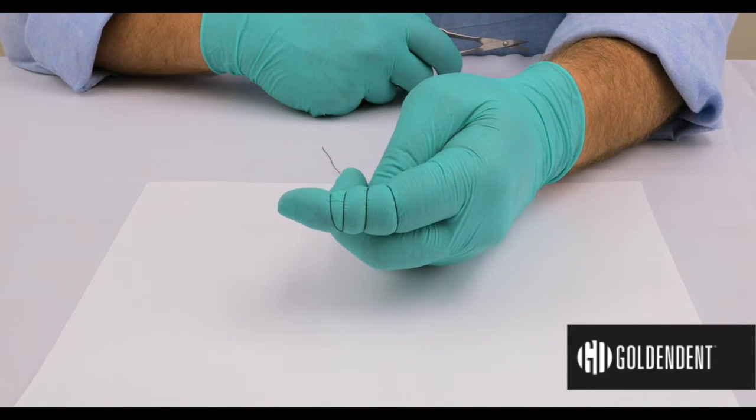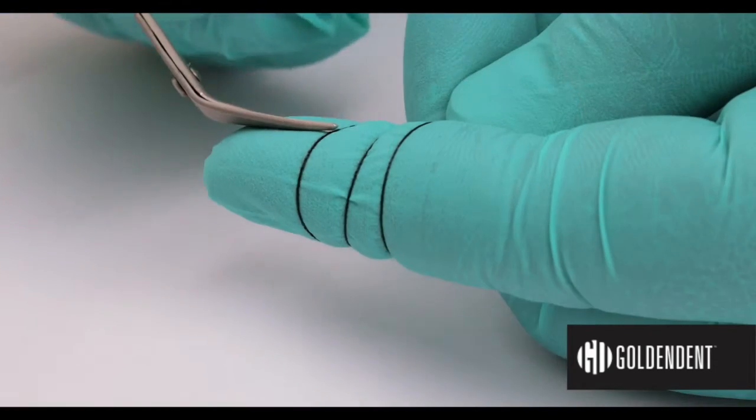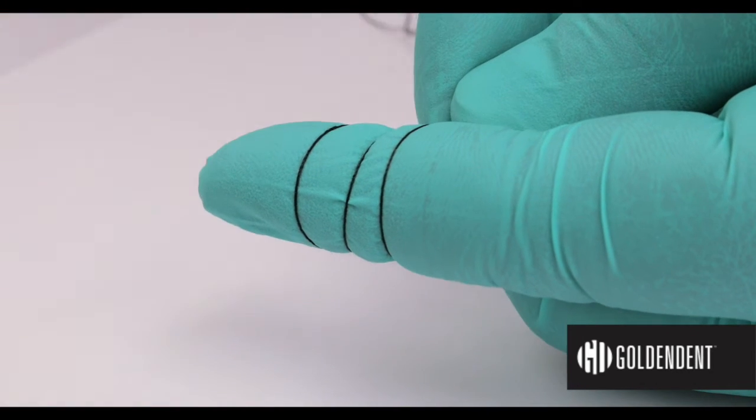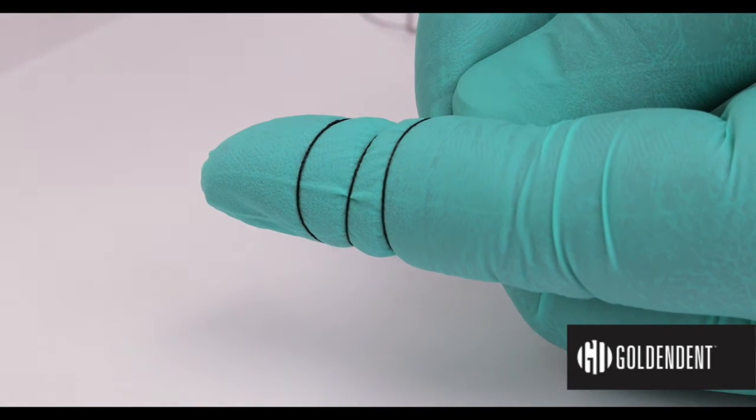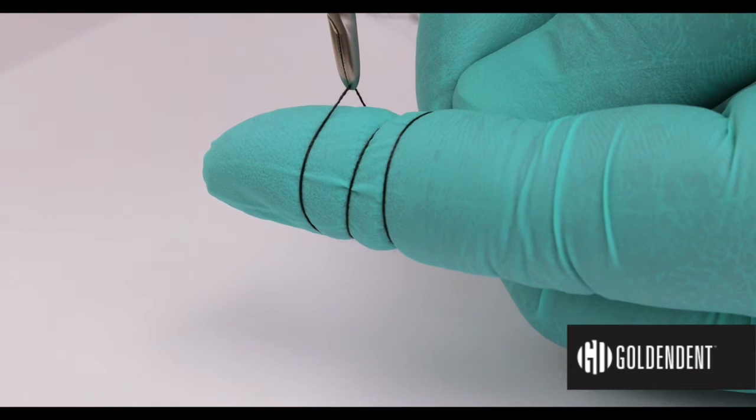The traditional means of removing a suture is to either sneak a pair of scissors underneath or to use a forceps to lift and create some space so that a pair of scissors can be fit to cut the suture.